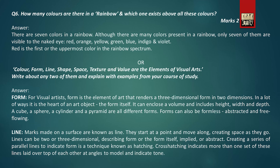In question number six, you have to write the colours of the rainbow and which one exists above all these colours. There is an alternate question in question number six: colour, form, line, shape, space, texture, and value are the elements of visual arts. Write about any two of them and explain with examples.